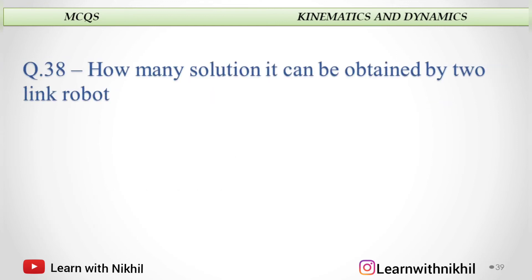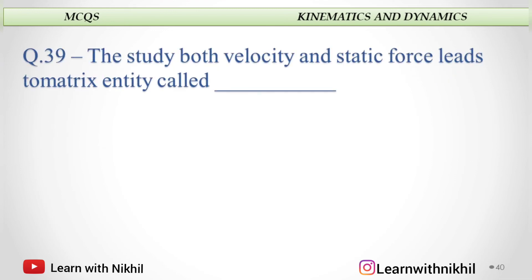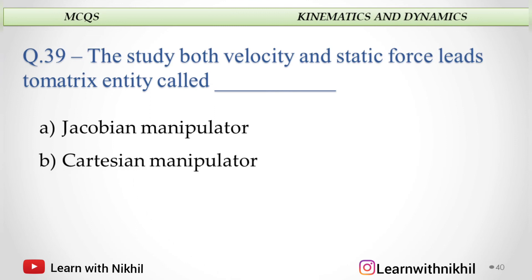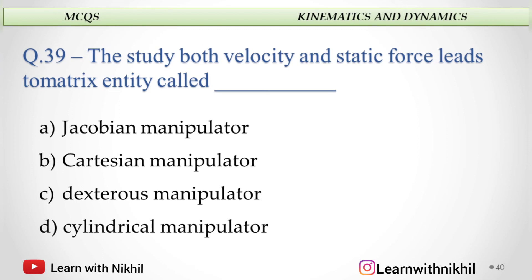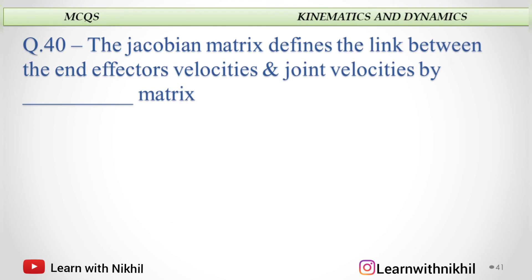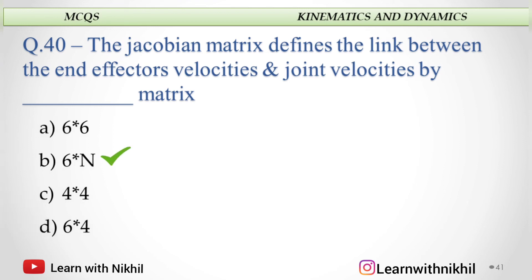How many solutions can be obtained for a 2-link robot? 1, 2, 3, or 0? The answer is 2. The study of both velocity and static force leads to a metric entity called: Jacobian manipulator, Cartesian manipulator, dexterous manipulator, or cylindrical manipulator. The answer is Jacobian manipulator. The Jacobian matrix defines the link between the end effector's velocity and joint velocities by a 6 by N matrix — remember it is always 6 by N.